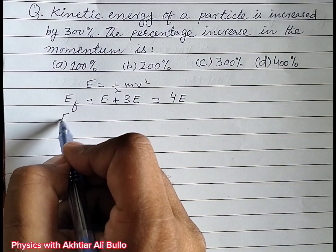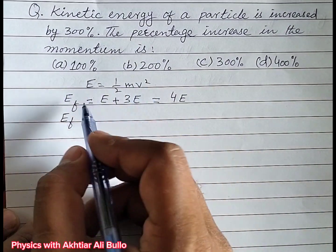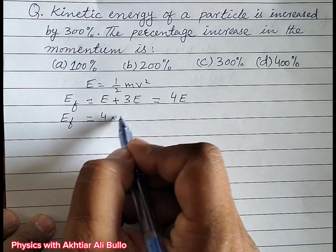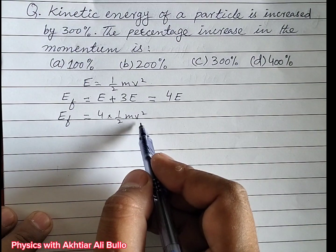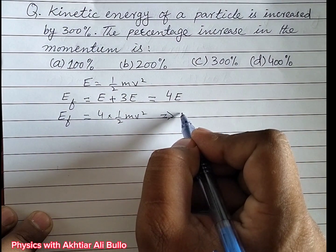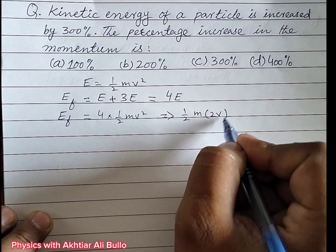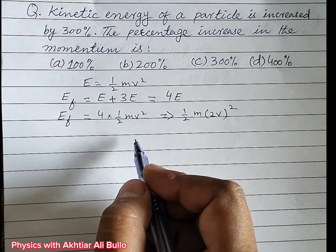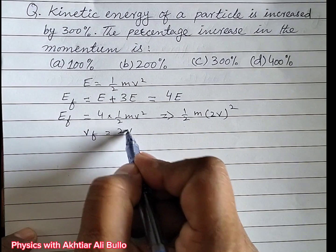So final kinetic energy equals 4 × ½mv², which we can also write as ½M(2V)². Therefore, the final velocity V_f is obtained as 2V.